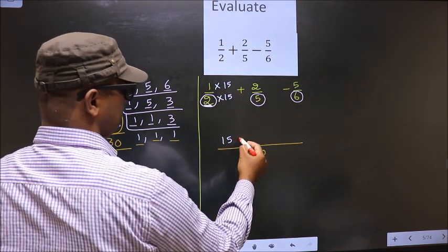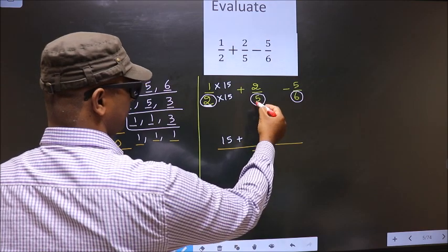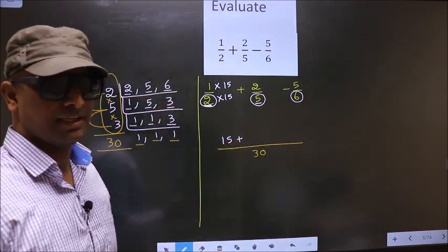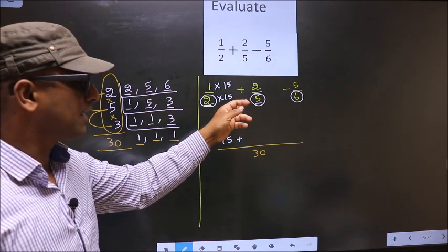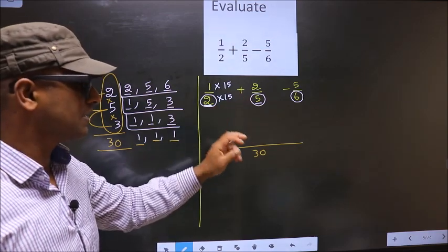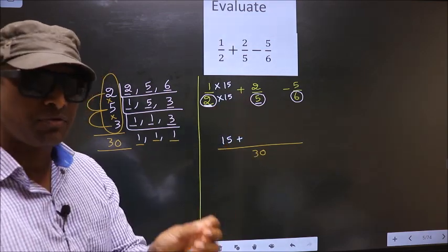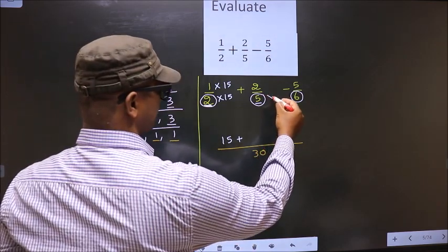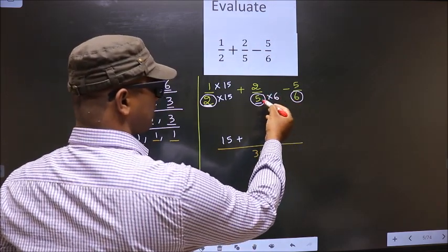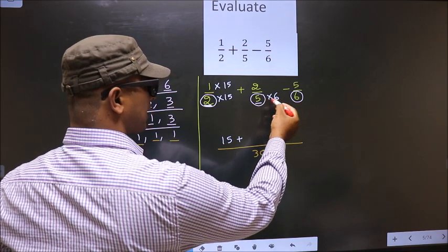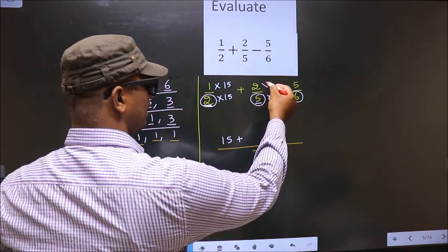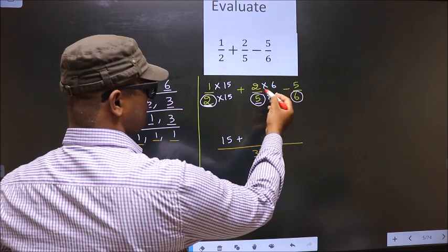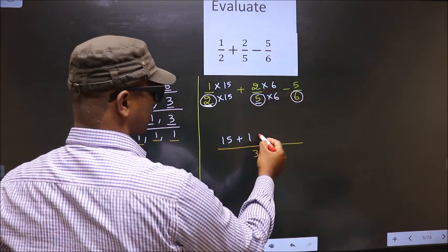Plus symbol as it is. Here we have 5 in the denominator, and here we have 30. Now 5 should change to 30. For that to happen, we should multiply by 6. Whatever number we are multiplying in the denominator, in the numerator also we should multiply by the same number. So we get 2 into 6, which is 12.